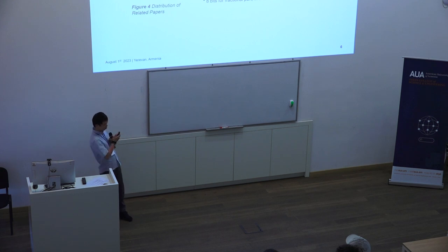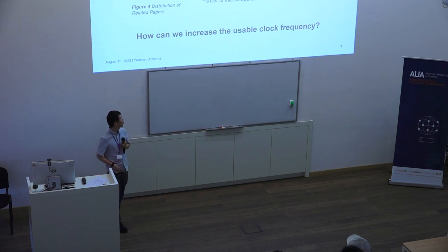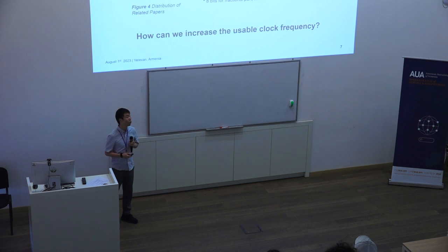But there was a problem. When we did that, we achieved only 100 megahertz for the clock frequency. While we know that when we do deep learning neural networks, like multi-layer perceptrons or CNNs, we already achieved much higher clock frequency. So this is something we want to still improve. The question is, how can we increase the usable clock frequency? We wanted to achieve something like 200 or 300 megahertz, because we know this device is capable of that.